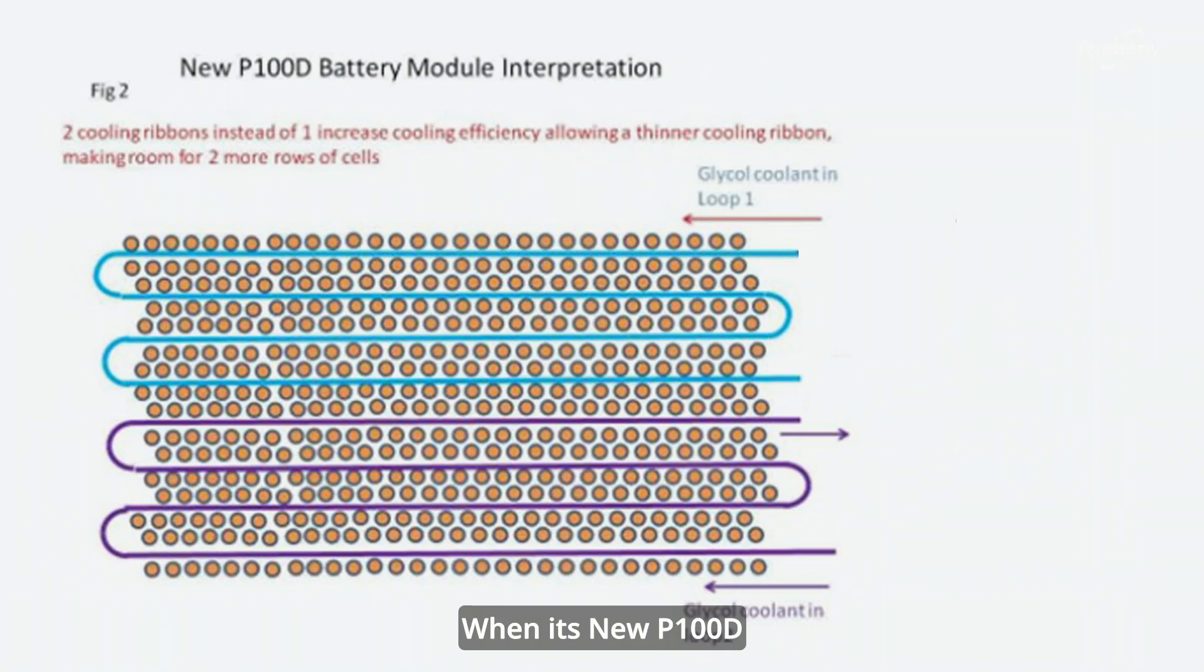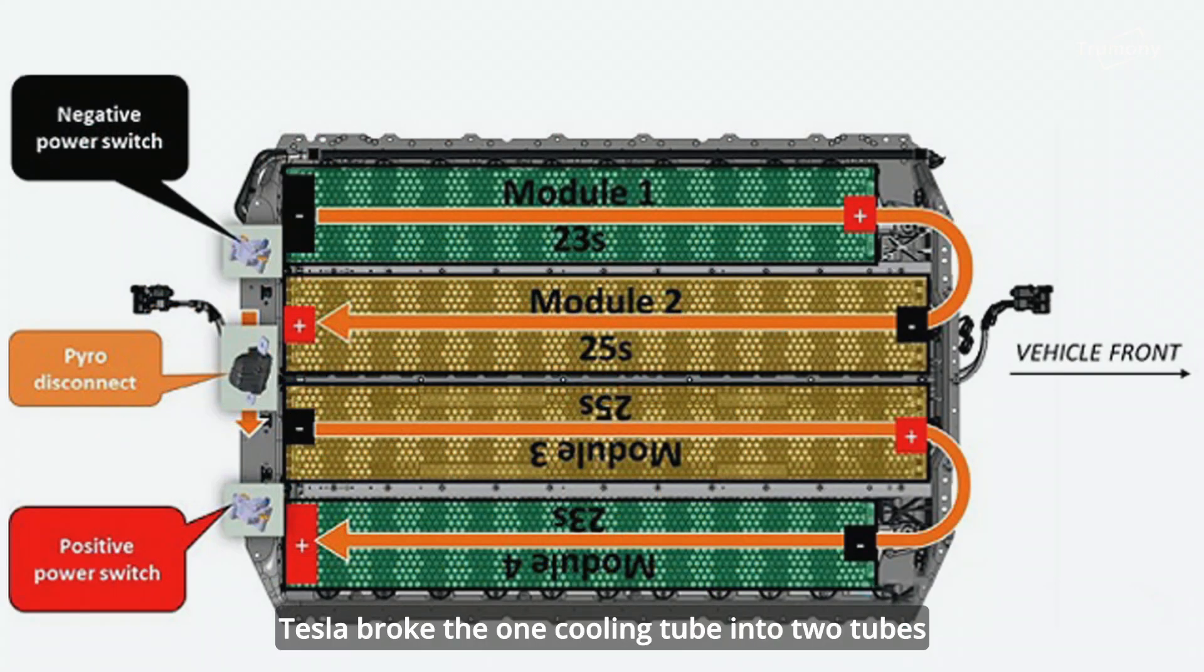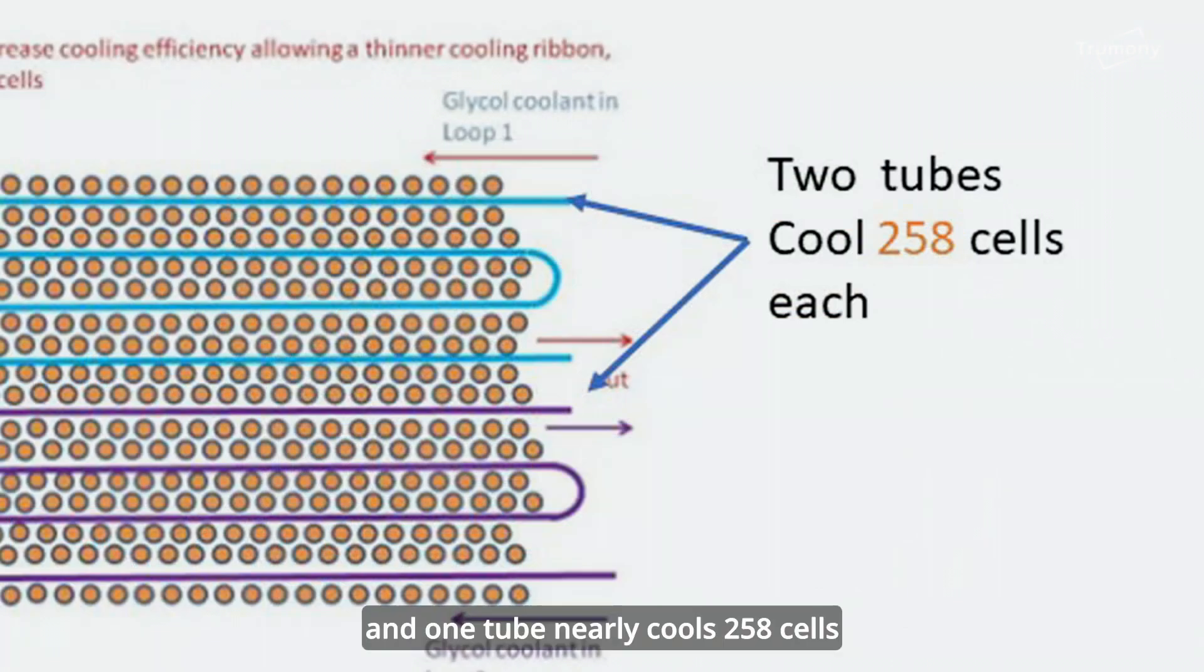When its new P100D battery module interpretation came out, Tesla broke the one cooling tube into two tubes, and one tube nearly cools 258 cells.